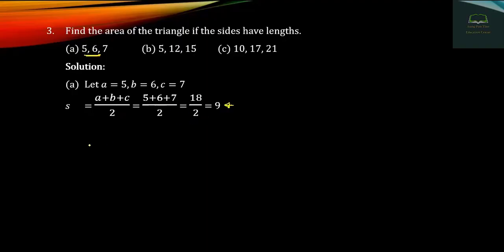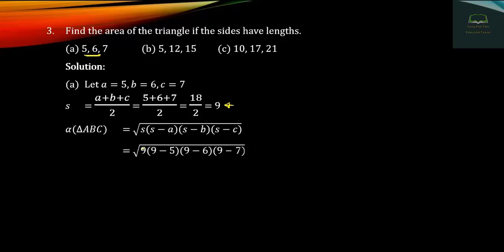Question number 6: Find the area of the triangle using Heron's formula. The formula is: square root of S times (S minus A) times (S minus B) times (S minus C), where S equals 9, A equals 5, B equals 6, C equals 7. We compute: 9 times 4 times 3 gives us the values needed.